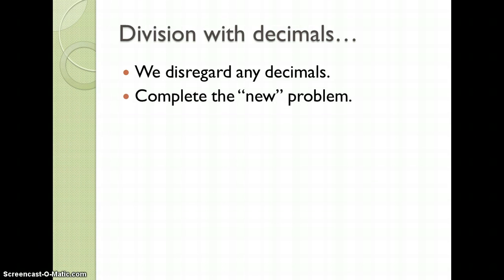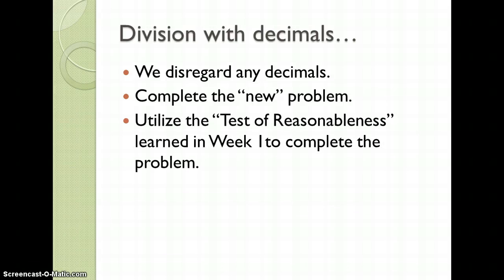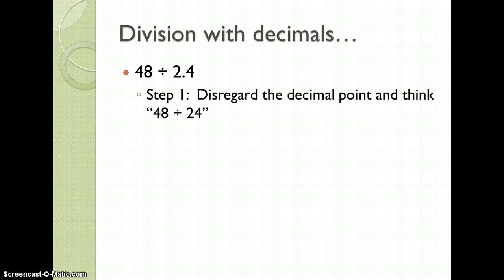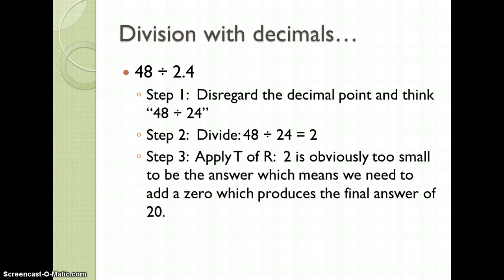Division with decimals: we're going to disregard any decimals or zeros if we have them, complete the new problem, and utilize the test of reasonableness. So 48 divided by 2.4 — we're going to disregard the decimal point and think 48 divided by 24, which is 2. Applying the test of reasonableness, 2 is obviously too small to be the answer, which means we need to add a 0, producing the final answer of 20. If you were to just take 48 and divide it by 2, our answer would be 24, so our answer needs to be around 24. Adding the 0 behind the 2 gives us 20, which is close to 24.